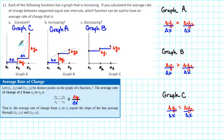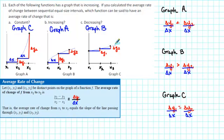In summary: if you see that a graph is curving in an upward direction, then it has an increasing rate of change. If you see that a graph is curving in a downward direction, then it has a decreasing rate of change. And if you see that the graph is a straight line, then it has a constant rate of change.